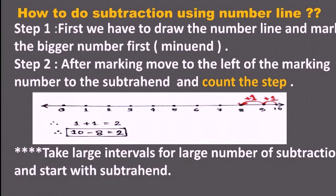Let's start with process 1. First of all, you have to draw the number line. How to draw the number line? Take your ruler, draw the line, and then put the numbers. When you are marking the numbers, the gap between two numbers should be the same. Now, what you have to do is take the minuend — the bigger number first. You have to mark the bigger number.